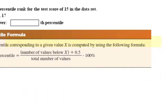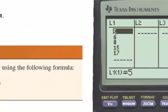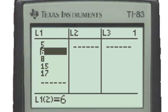The procedure then says to find the percentile corresponding to a given value, take the number of values below that value, add 0.5 to that number, divide by the total number of values and multiply by 100%.